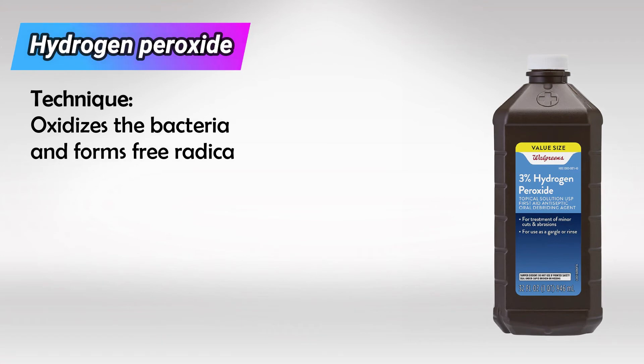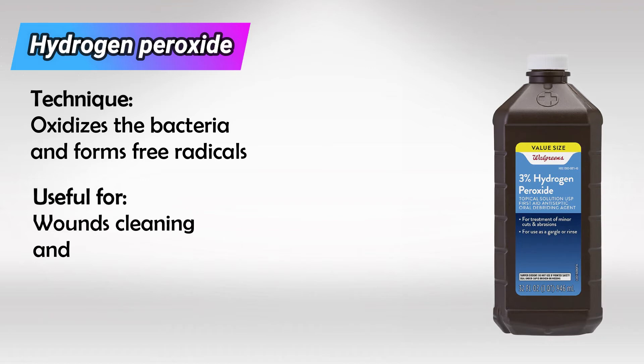Next we have hydrogen peroxide. This is a free radical generator, which means it uses oxygen to oxidize and kill bacteria. Hydrogen peroxide is excellent at killing bacteria and other organisms attached to inorganic material, which is why it's excellent for cleaning dirty wounds. It is also sporicidal — it does kill spores.